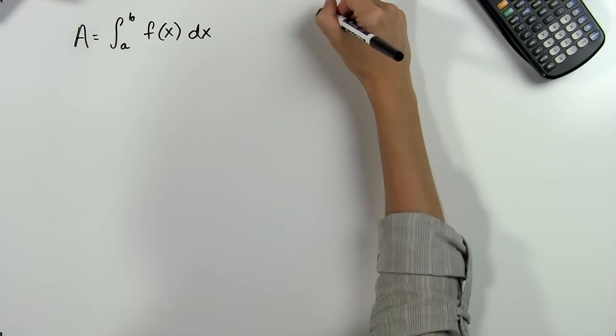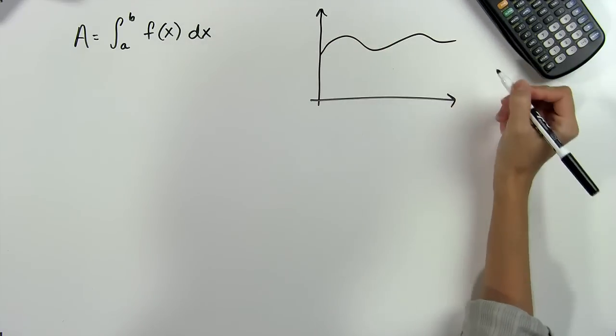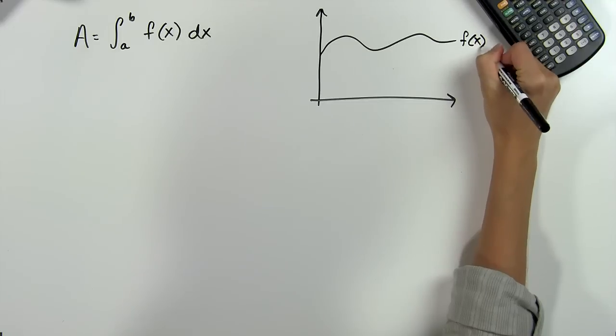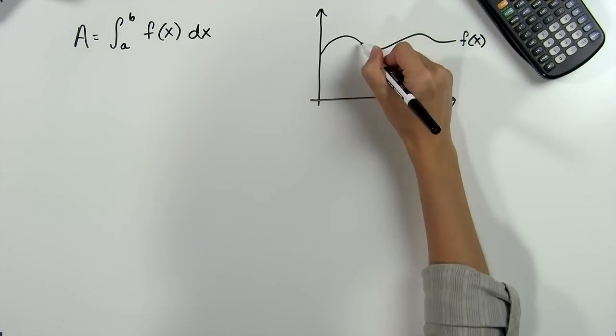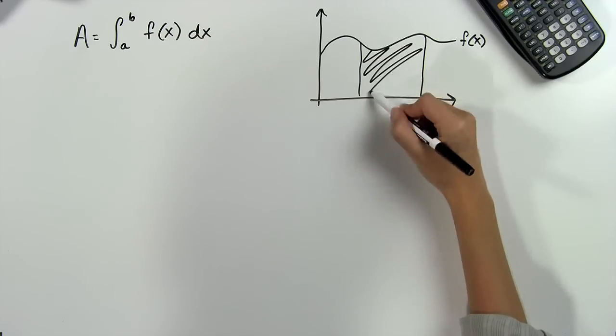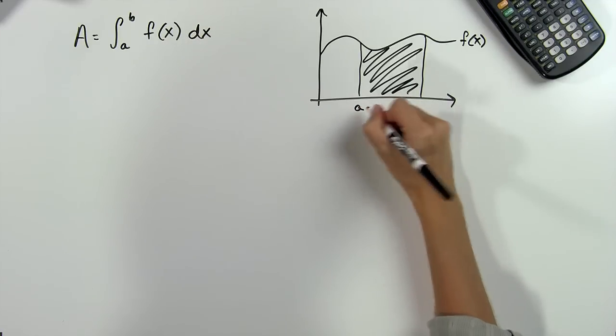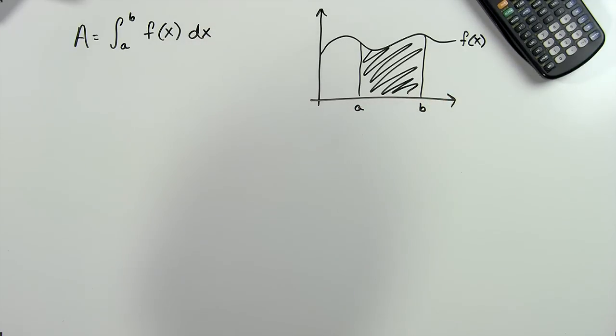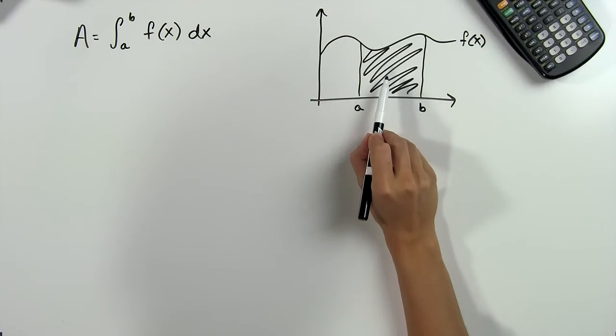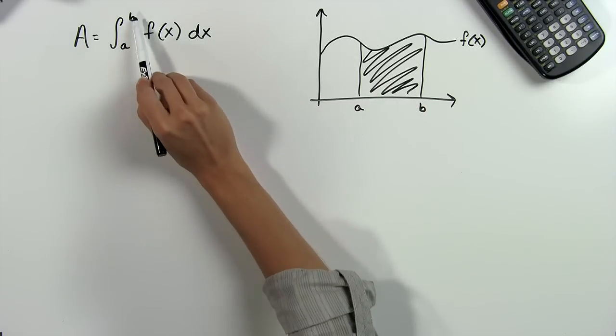What this means is that we have a curve on a graph defined by the function f of x. We want to find the area of the shaded region bounded by these two lines at the points a and b. So to find this area, we'll take the integral of this function right here from the points a to b.